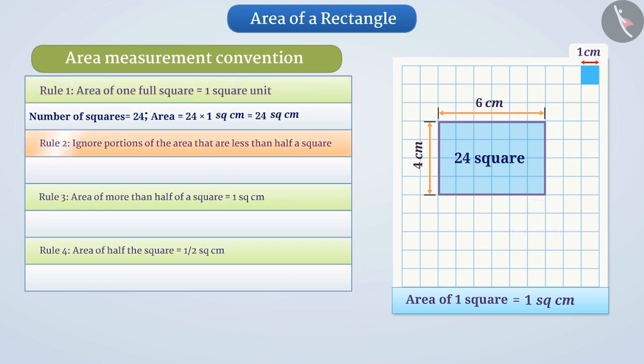Rule 2: Ignore portions of the area that are less than half a square. We don't have such squares here. Rule 3: If more than half of a square is in a region, count it as 1 cm². We don't have such squares either.